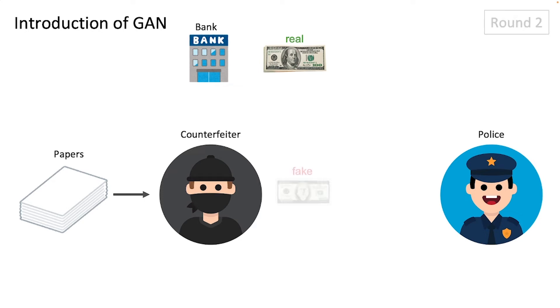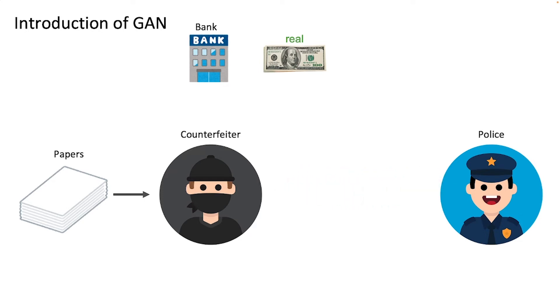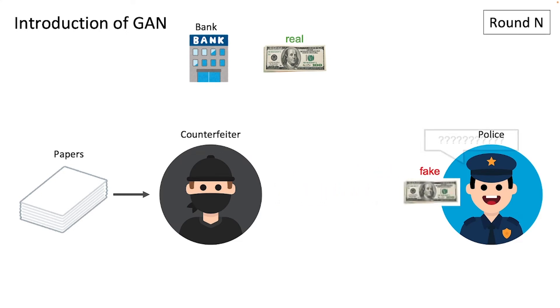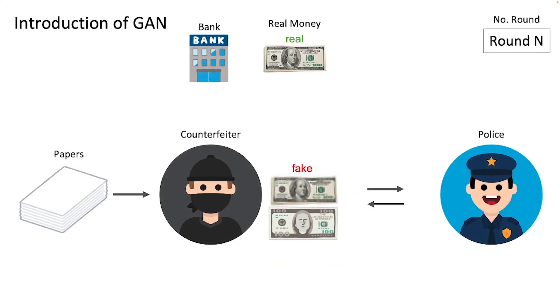So in the end, we should get some super realistic-looking fake money, while the police officer may still be able to tell the difference between them.